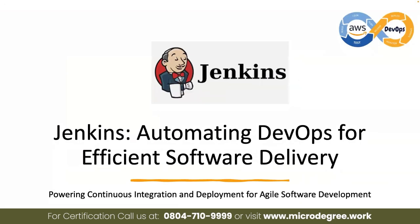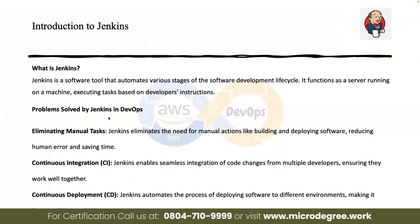Jenkins is an open source tool. It can help eliminate manual tasks because all the steps are automatically automated. This means manually consumed time and human error will be reduced. It will help you achieve efficiency in your software delivery.